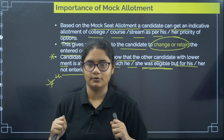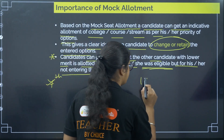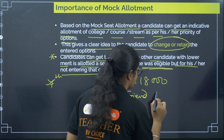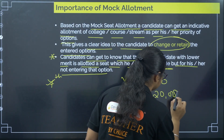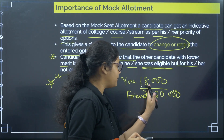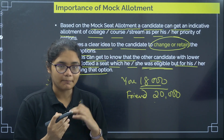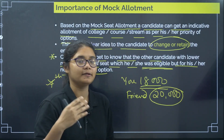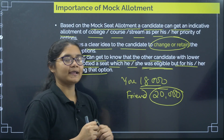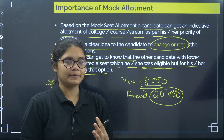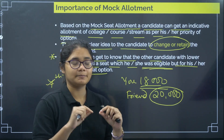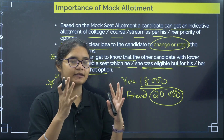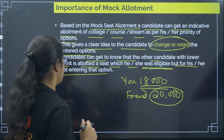Suppose there are two friends — you and your friend. You secured a rank of 18,000 in the exam and your friend secured around 20,000. You know that you can get a better college than your friend because your rank is better. But after the mock allotment, you see that your friend has got a better college and a better course than you, in spite of your better rank. Why did this happen? Obviously because you had not entered that particular option. So now you can realize this and make changes in your option entry. That is why mock allotment is very important.